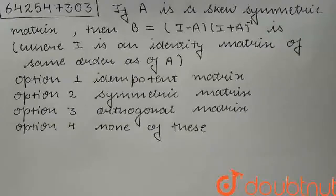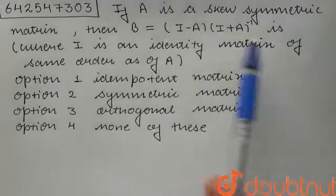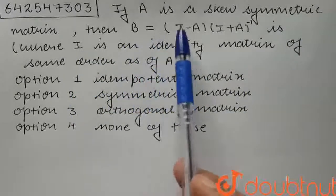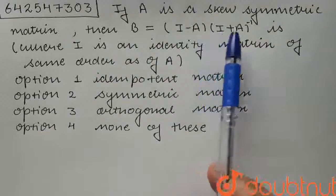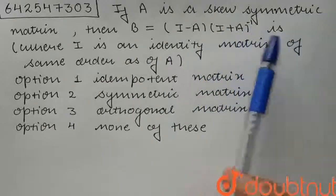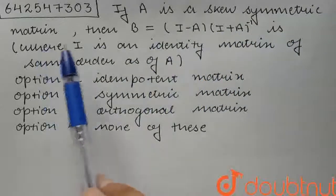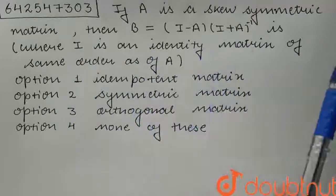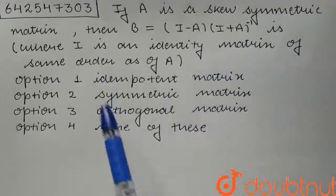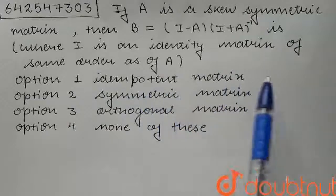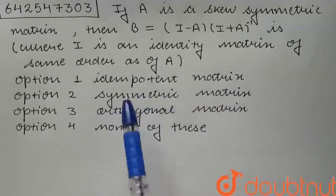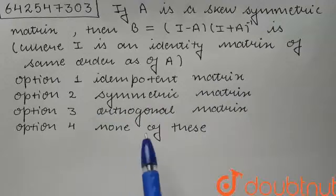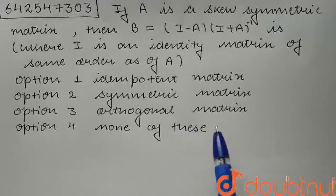Hello students, today's question is: if A is a skew symmetric matrix, then B is equal to (A minus I) into (A plus I) whole inverse. Here I is an identity matrix of the same order as A. We are given four options: first, idempotent matrix; second, symmetric matrix; third, orthogonal matrix; and fourth, none of these.